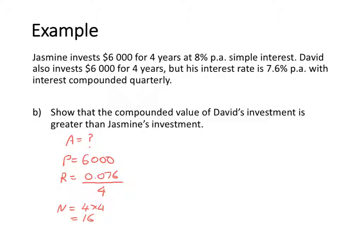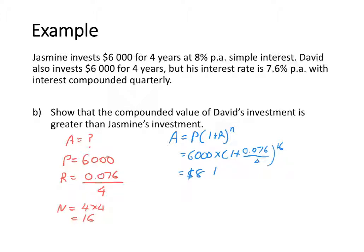So over the 4 years he's going to compound 16 times. His future amount equals his principal times 1 plus r to the power of n, so that equals $6,000 times (1 plus 0.076 over 4) to the power of 16. Using a calculator, you get an answer of $8,108.46. So at the end of the 4 years, David is going to have $8,108.46.